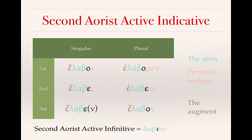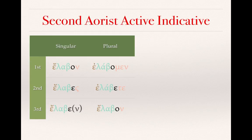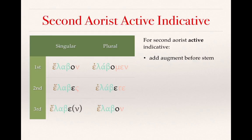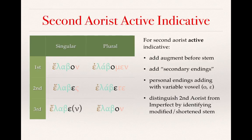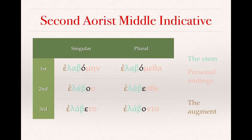With that chart still on screen, a few more details about the formation of the second aorist active indicative: we add the augment before the stem consistently in all forms; we add secondary endings indicated by the salmon color; the personal endings are added with a variable vowel, either omicron or epsilon. One of the only ways to distinguish the second aorist from the imperfect is by identifying the modified or shortened stem.